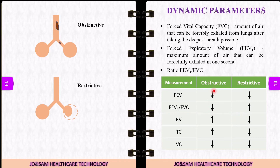A common example is asthma, which is an obstructive disease — there is a problem with expiration. There are many lung diseases, classified as either obstructive or restrictive.